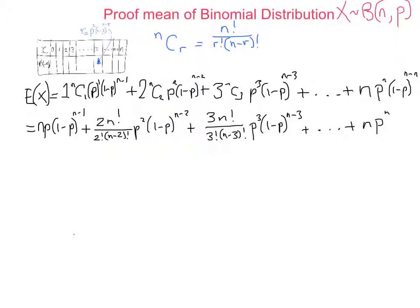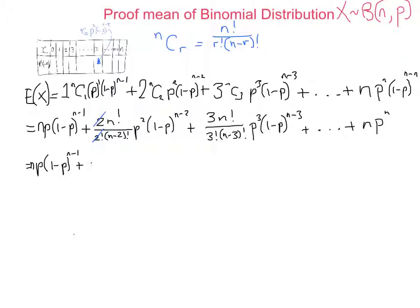Now simplifying: in the second term, the 2 in the numerator cancels with the 2 factorial in the denominator. In the n factorial on top versus (n minus 2) factorial on the bottom, terms 1 through n minus 2 cancel, leaving n times (n minus 1) in the numerator. So the second term becomes n(n minus 1) times p times (1 minus p) to the n minus 1.